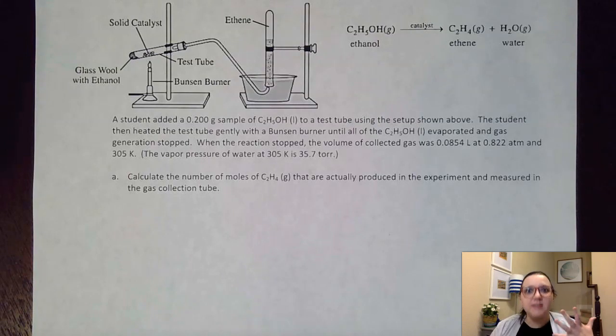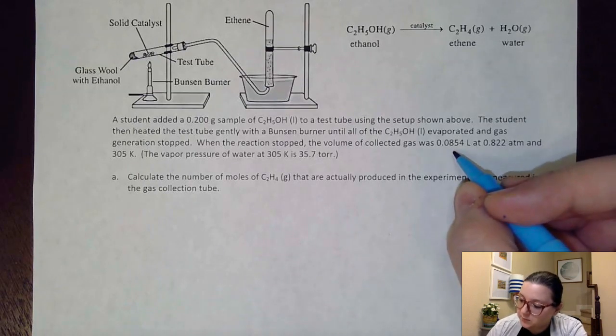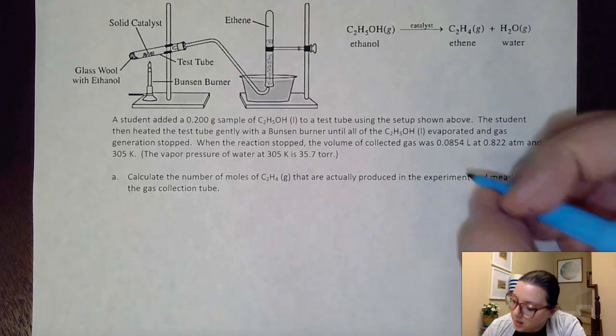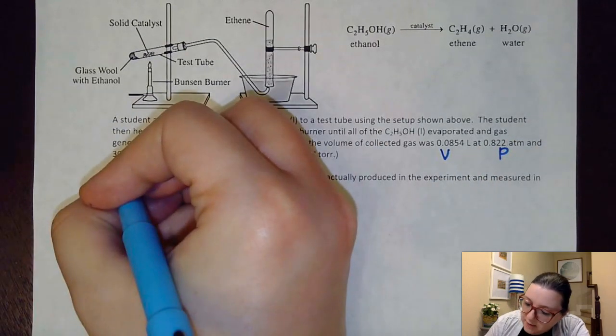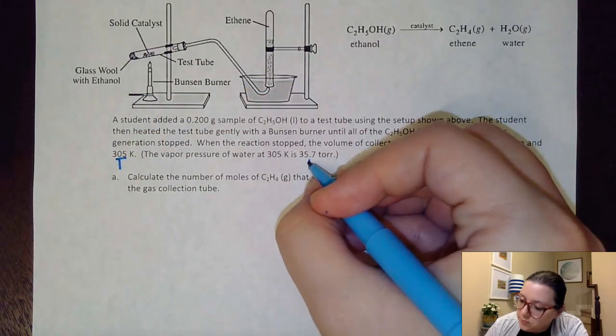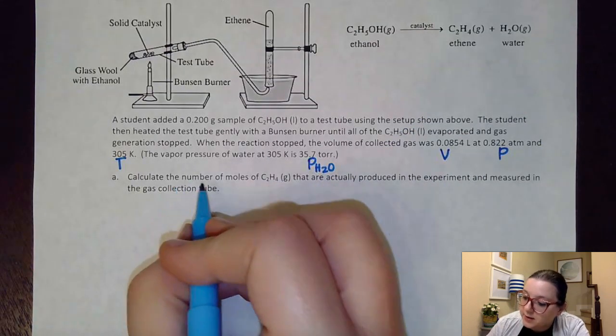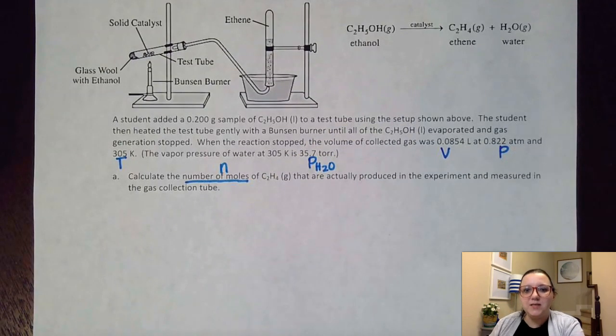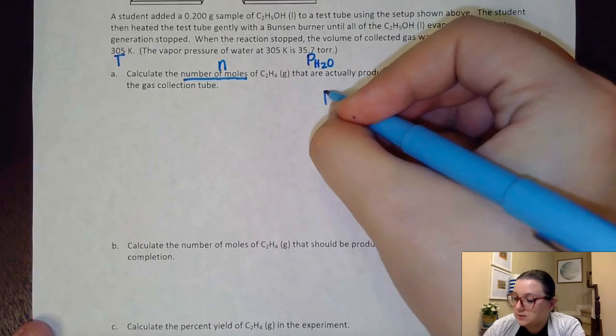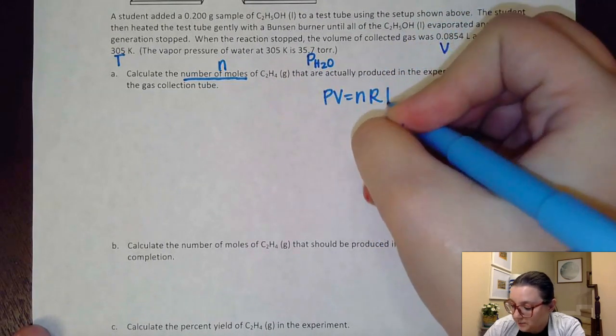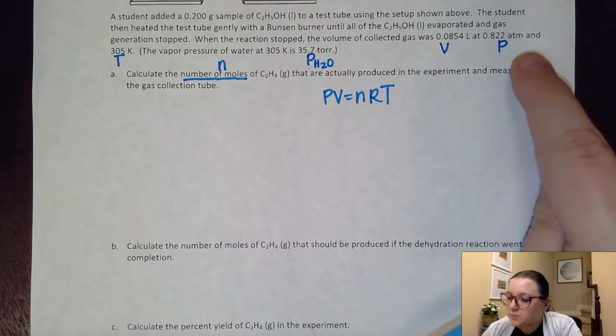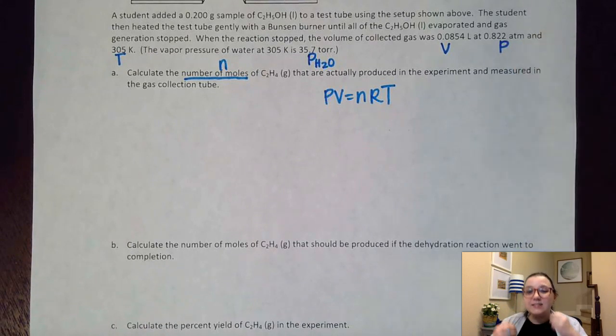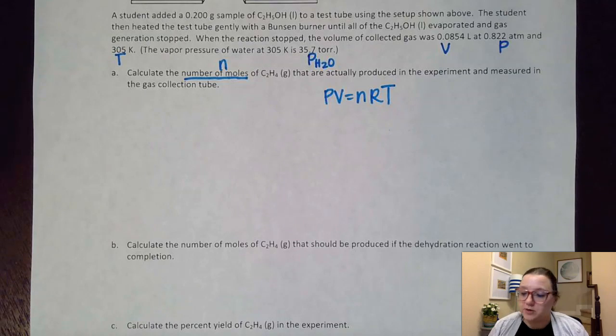So let's think about the data we have for what we collected. If I look back up here, I notice that we have a volume. We have a pressure. We have a temperature. And then we also have a pressure of water vapor. They're asking us about calculating a number of moles, which means I'm trying to find an N. And if I start looking at all those pieces, hopefully we see that this is looking a lot like we would be doing some sort of PV=nRT calculation, which we are. However, here is the one issue. This pressure of the collected gas is technically both the water vapor as well as our gas that we are trying to measure. And so before we use it, we're going to have to subtract off the water vapor pressure.